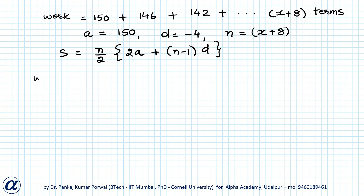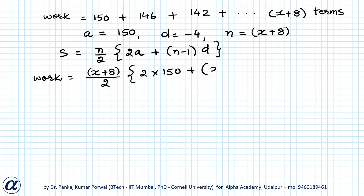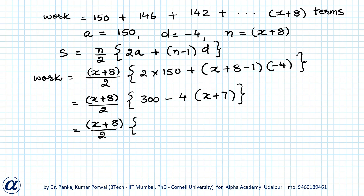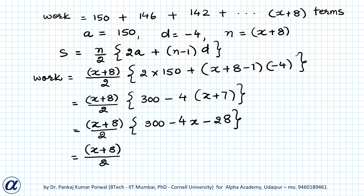So the total work becomes: (x + 8)/2 × [2 × 150 + (x + 8 − 1) × (−4)]. This equals (x + 8)/2 × [300 + (x + 7)(−4)], which equals (x + 8)/2 × [300 − 4x − 28], which simplifies to (x + 8)/2 × (272 − 4x).